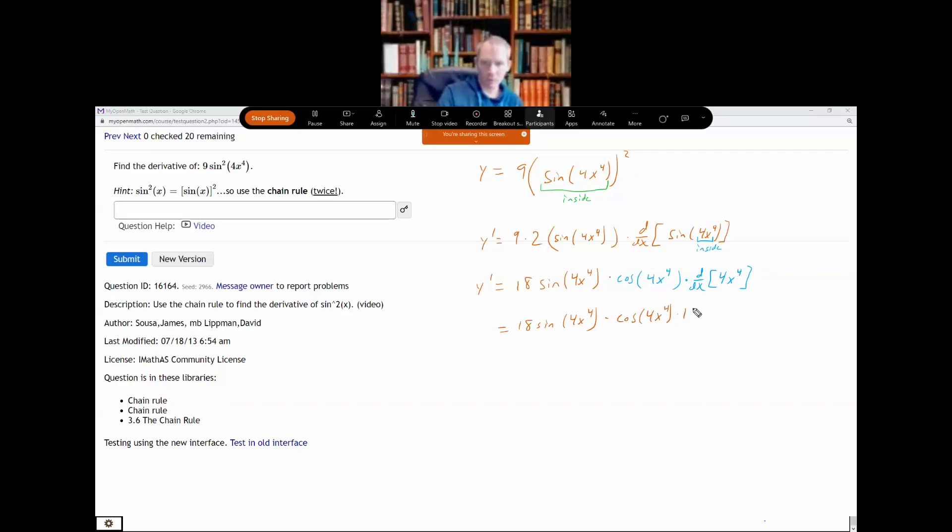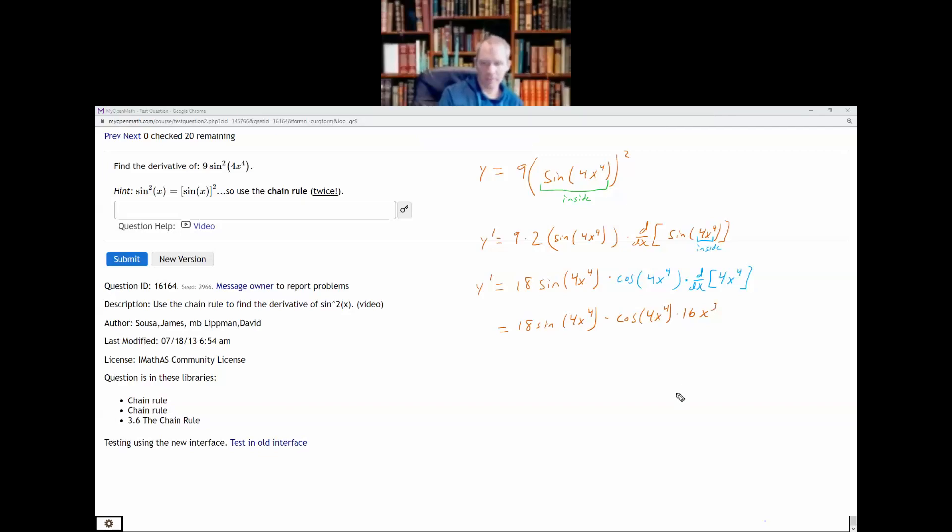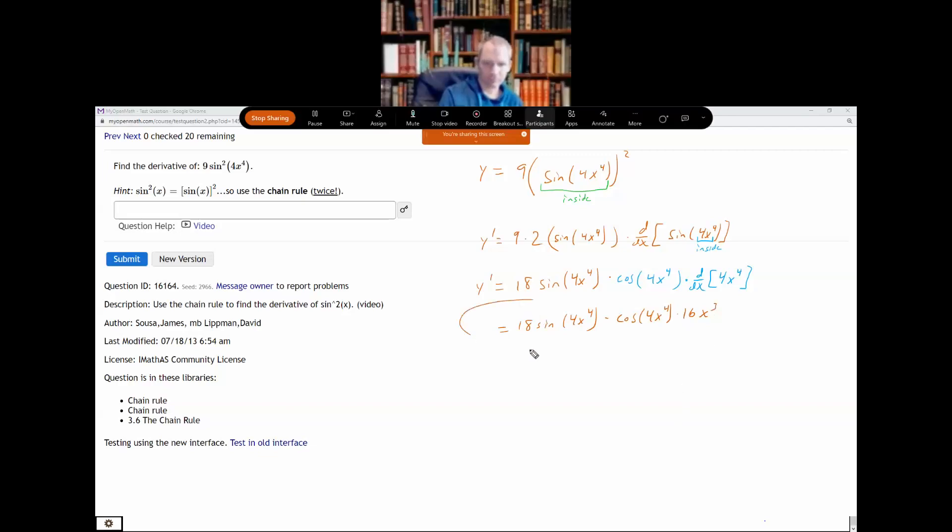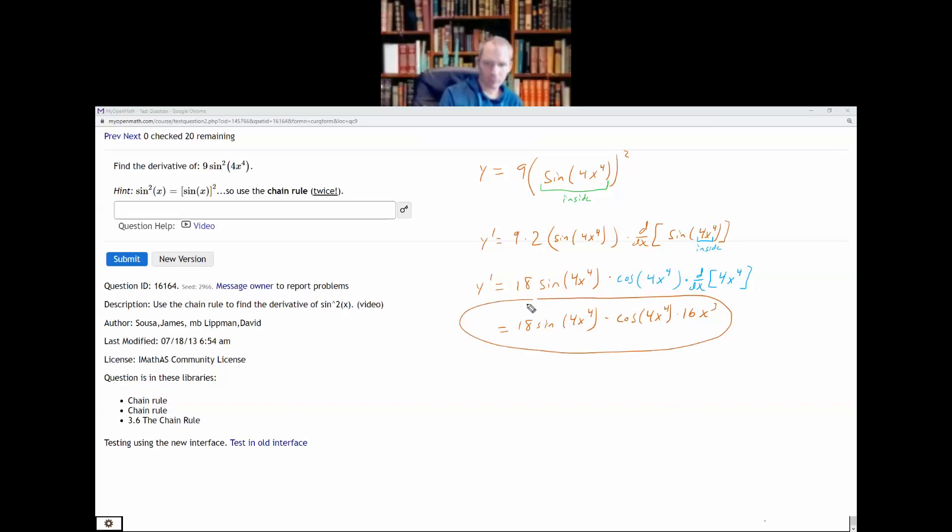So recopying stuff down, when I take the derivative of 4x to the fourth the 4 comes down so I get 16x cubed. And you could simplify a little, you could multiply the 16 and the 18 together, but that's basically it.